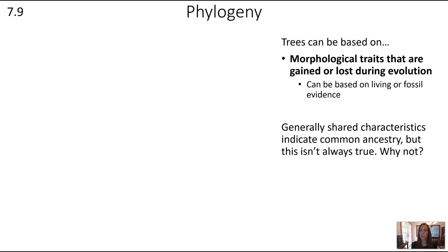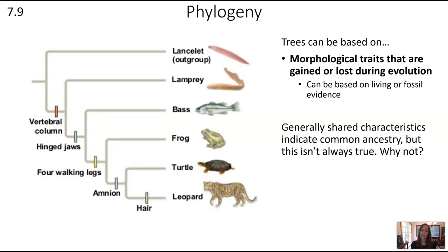One type of information is morphological traits — the physical traits of an organism, including anatomy, physiology, and behavior — things we can look at, dissect, or see in fossil evidence. These are traits that can be gained or lost during evolution. For example, traits on this cladogram include a vertebral column, hinged jaws, four walking legs, amnion, and hair. Any groups that branch after the point where a trait appears will have that trait. Generally, shared characteristics indicate common ancestry, which is why this technique works.